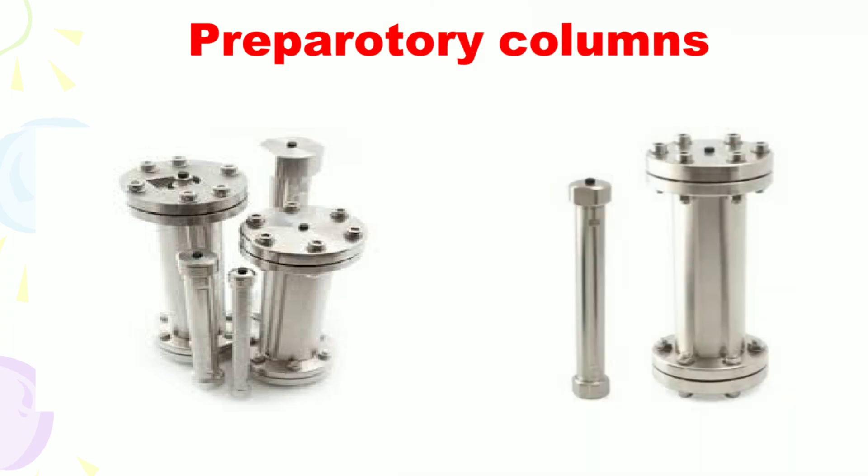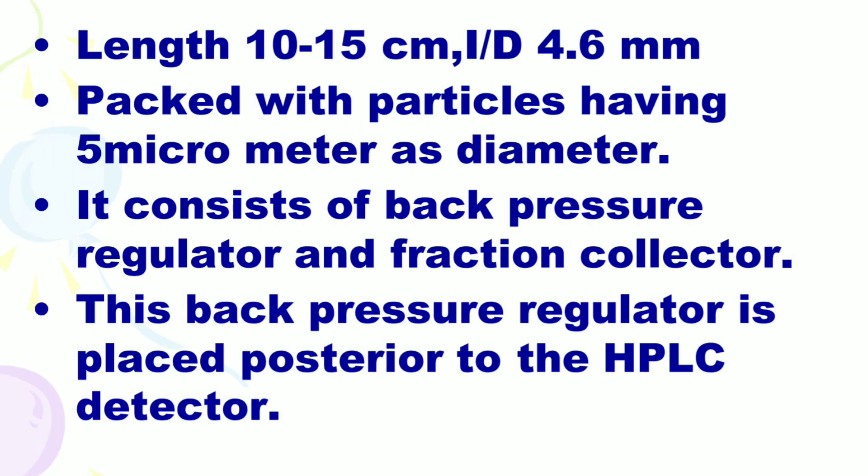And the last one is the preparatory column. The length is 10 to 15 cm and the internal diameter is 4.6 mm. It is packed with particles having 5 micrometers as diameter. It consists of a back pressure regulator and fraction collector. This back pressure regulator is placed posterior to the HPLC detector.